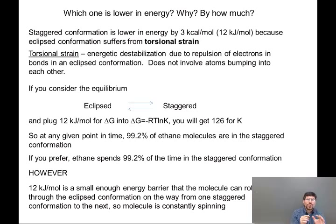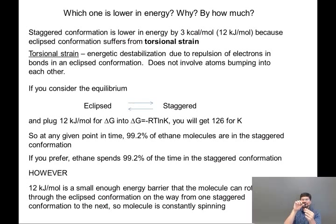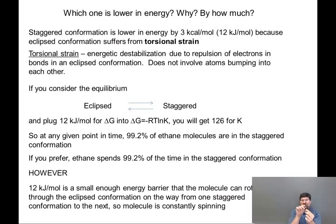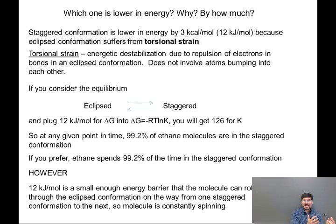However, 12 kilojoules per mole is a small enough energy barrier that it is possible for the molecule to rotate through the eclipsed conformation on the way from one staggered conformation to the other. The molecule is going to spend most of its life in a staggered conformation, wiggling around a little bit, but it can pass through the eclipsed conformation to get to another staggered conformation repeatedly. This energy barrier is accessible to the molecule — much, much smaller than the energy barrier associated with breaking a covalent bond.